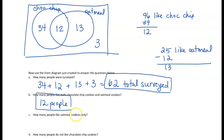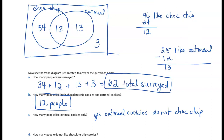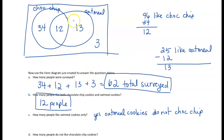How many people like oatmeal cookies only? Oatmeal cookies only means they like oatmeal cookies but not chocolate chip. Cover the chocolate chip cookie set, and what remains is the right side of the oatmeal set — that's 13 people within the oatmeal cookie set but not the chocolate chip cookie set.